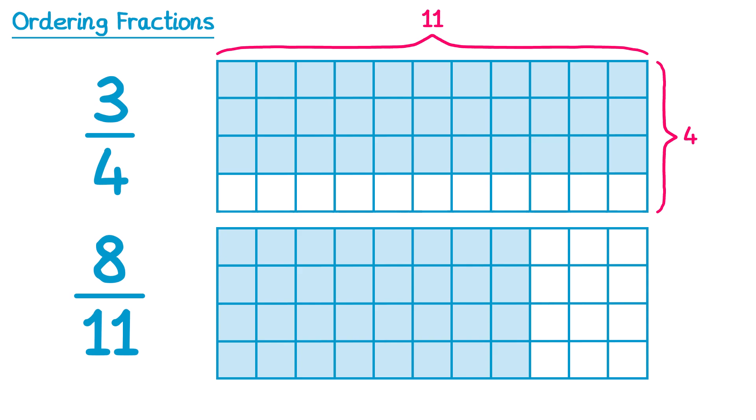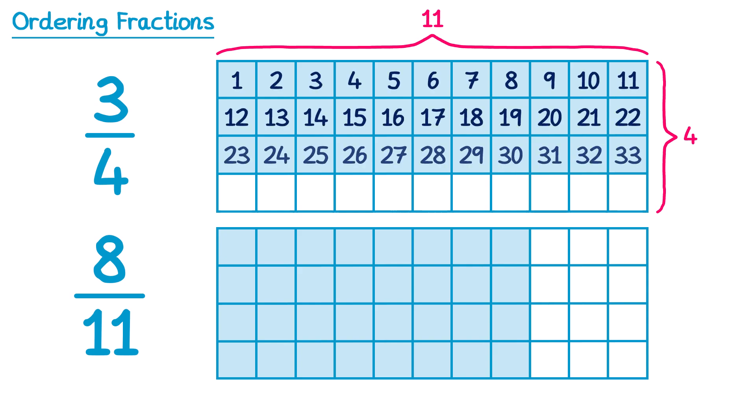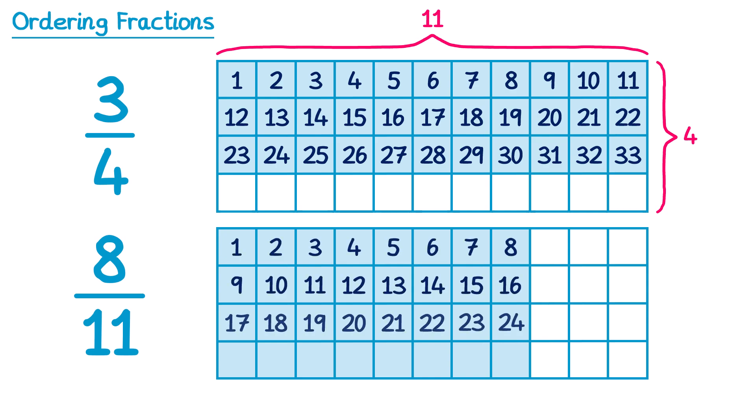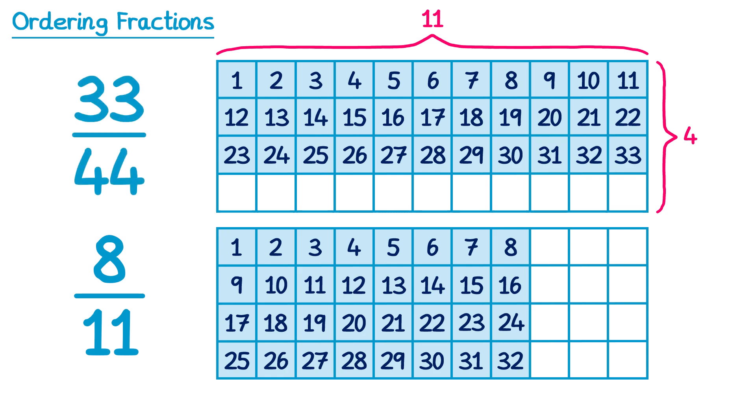Now to work out which one has more shaded, we can just count up the squares. In the first one, 3 quarters, if we count up all of the squares, there are 33 of them shaded. In the second one, 8 elevenths, there are 32 of them shaded. This means 3 quarters is the same as 33 over 44, because 33 are shaded and there are 44 squares in total. And 8 elevenths is the same as 32 over 44, because there are 32 shaded and 44 in total. So we can now be sure that 33 over 44 is bigger than 32 over 44, which means 3 quarters was bigger than 8 elevenths.